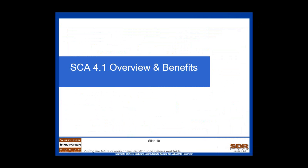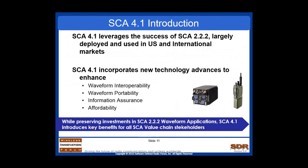This part of the presentation shares a number of overview and benefits as identified by the advocacy workgroup of the SCA at the WINF. The first thing to keep in mind is that SCA 4.1 leverages the success of 3.2.2, which is largely deployed in U.S. and international markets. It incorporates new technology advances to enhance waveform interoperability, waveform portability, information assurance, and affordability. Part of the interest in 4.1 is that it preserves investments done in 3.2.2 waveform applications, while introducing key benefits for stakeholders throughout the complete value chain.